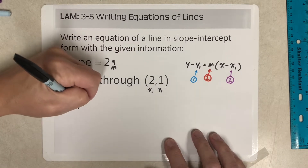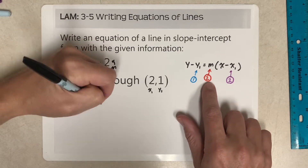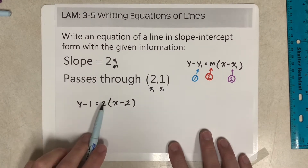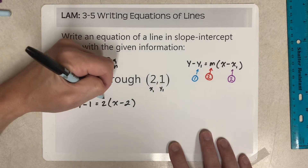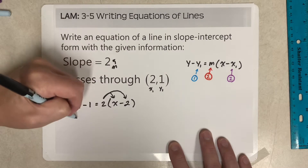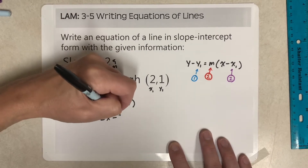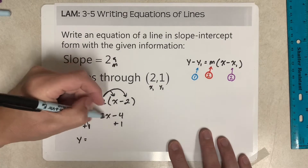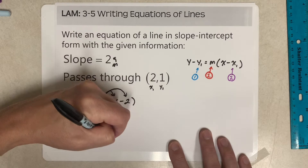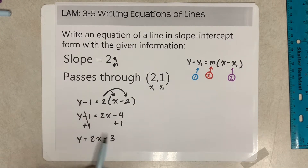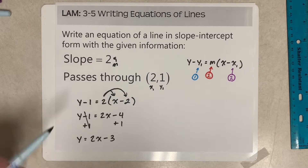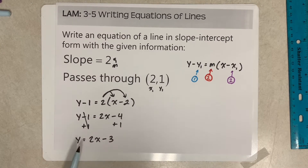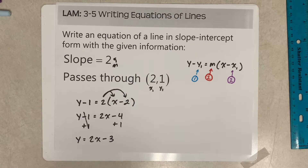So we get y minus 1 equals 2 times (x minus 2). After you get everything plugged in, it's a two-step process: distribute your slope, then move your constant over. So y minus 1 equals 2x minus 4, then add 1 to both sides and you get y equals 2x minus 3. You can verify: the slope is 2, and when x is 2, 2 times 2 is 4 minus 3 is 1. That's your y value, so it checks out.